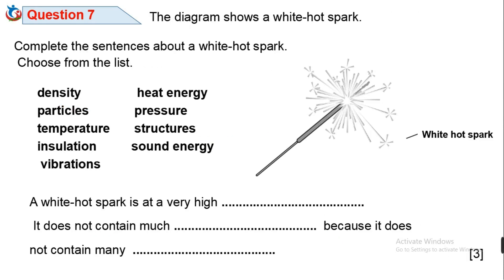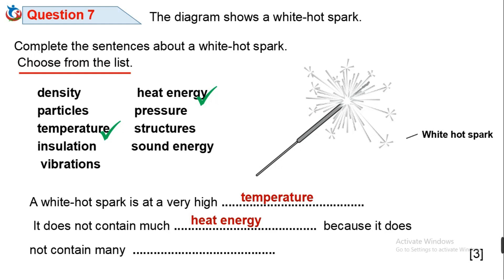Question 7. The diagram shows a white hot spark. Complete the sentences about a white hot spark — choose from the list. A white hot spark is at a very high temperature. It does not contain much heat energy because it does not contain many particles.